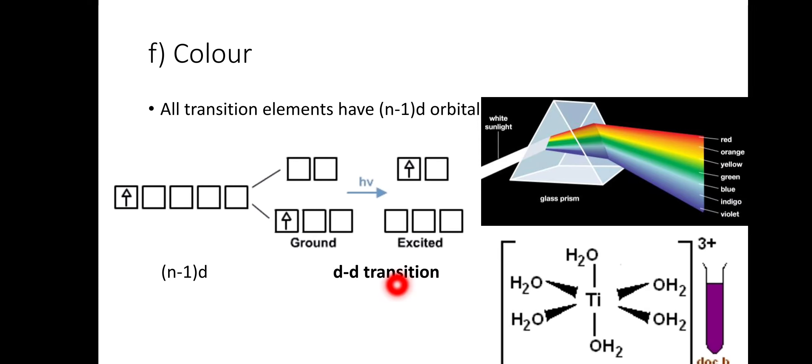Every ion absorbs a different wavelength and transmits the remaining set of wavelengths that gives different colors to the ions. Just like sunlight - white color - when they fall onto a prism, they produce different colors, seven color range. It means white light is made up of seven colors.